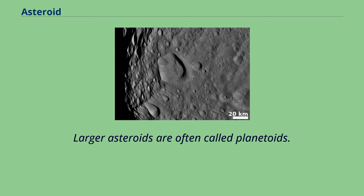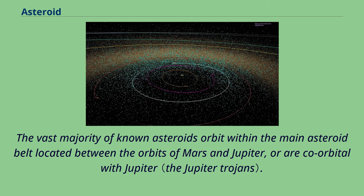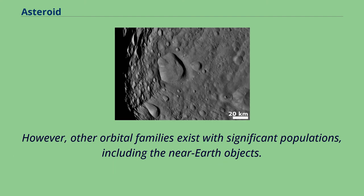Larger asteroids are often called planetoids. Millions of asteroids exist; many are shattered remnants of planetesimals, bodies within the young sun's solar nebula that never grew large enough to become planets. The vast majority of known asteroids orbit within the main asteroid belt located between the orbits of Mars and Jupiter, or are co-orbital with Jupiter. However, other orbital families exist with significant populations, including the near-Earth objects.